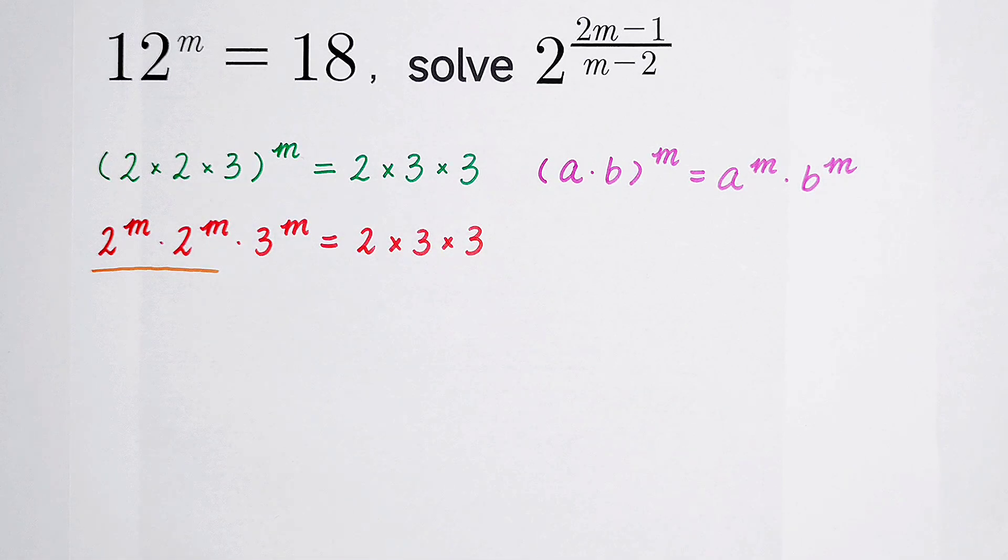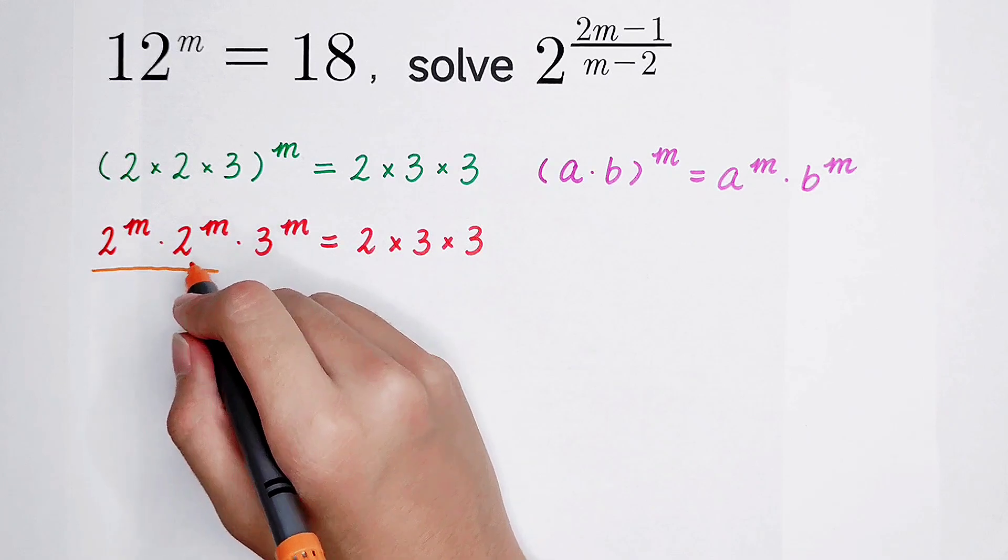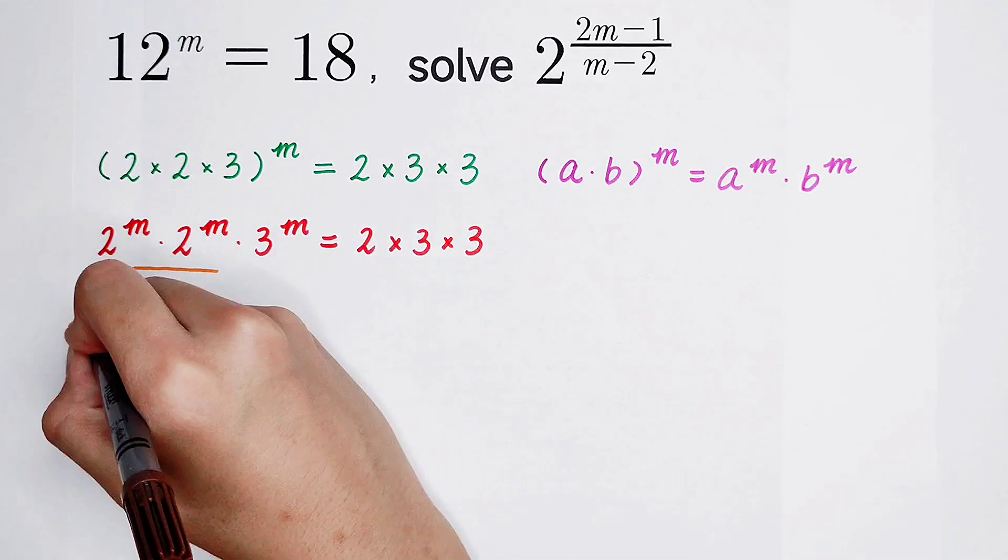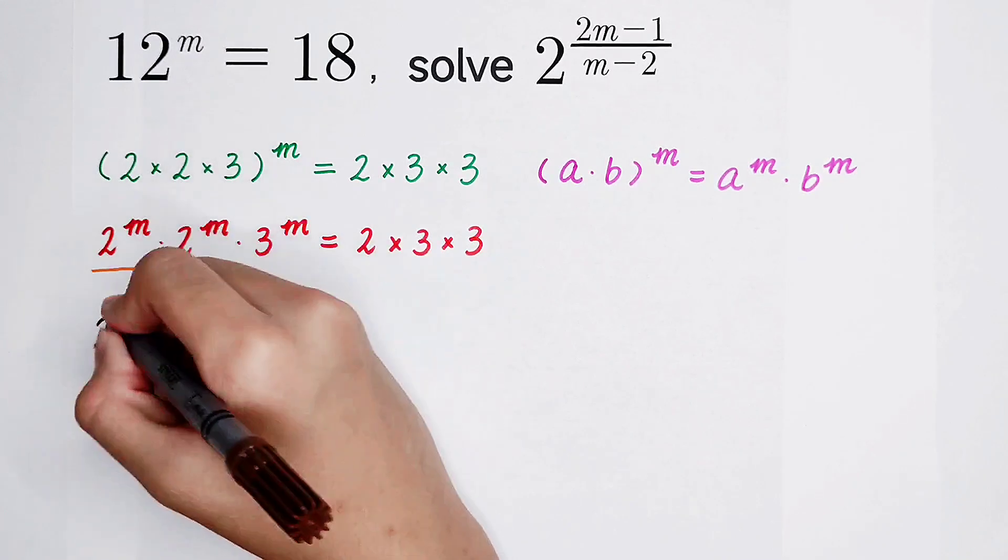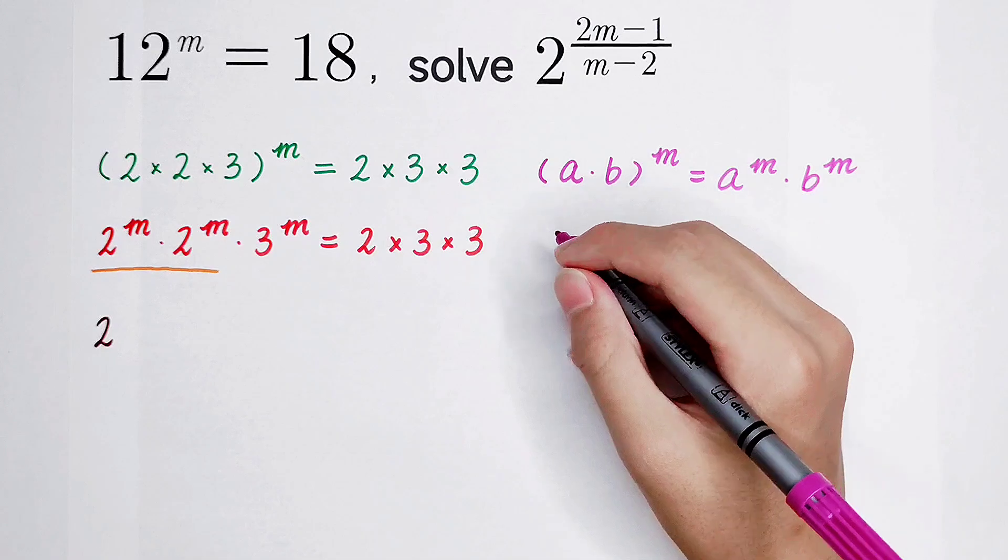2 to the power m, then times 2 to the power m. They are the same. I can write it as 2 to the power m. Now, I'm going to use another formula.